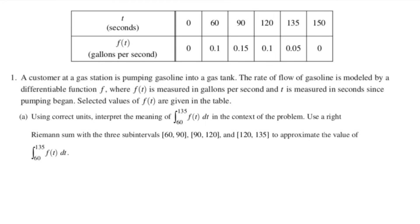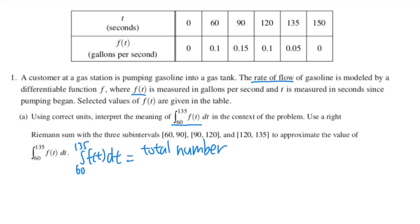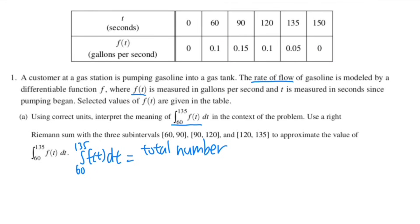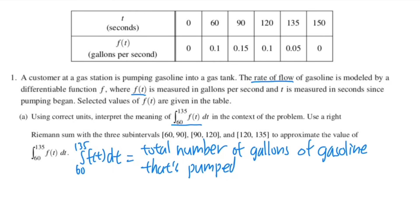For question one, we're given a table about pumping gasoline into a tank. The function f(t) represents the rate of flow of the gasoline. We first interpret the meaning of this integral. Because we're integrating a rate function, the integral from 60 to 135 represents the total number of gallons of gasoline pumped into the tank.